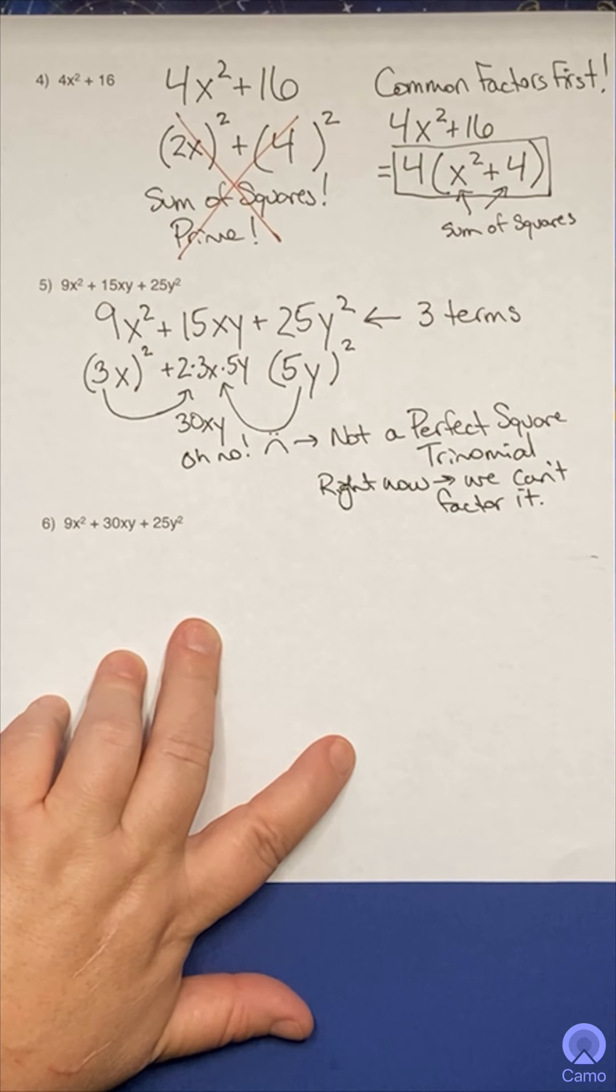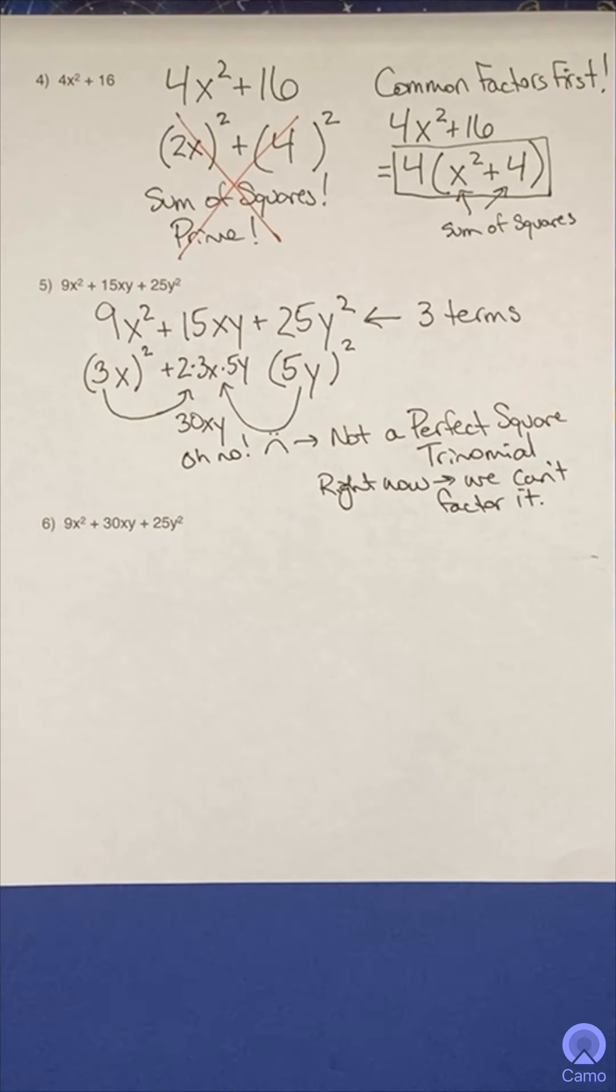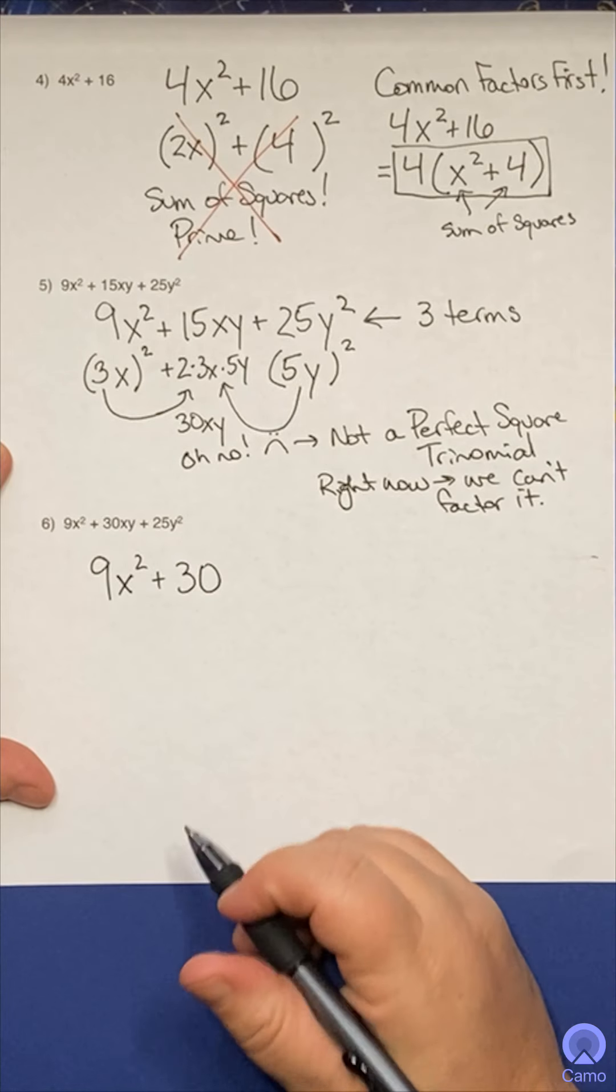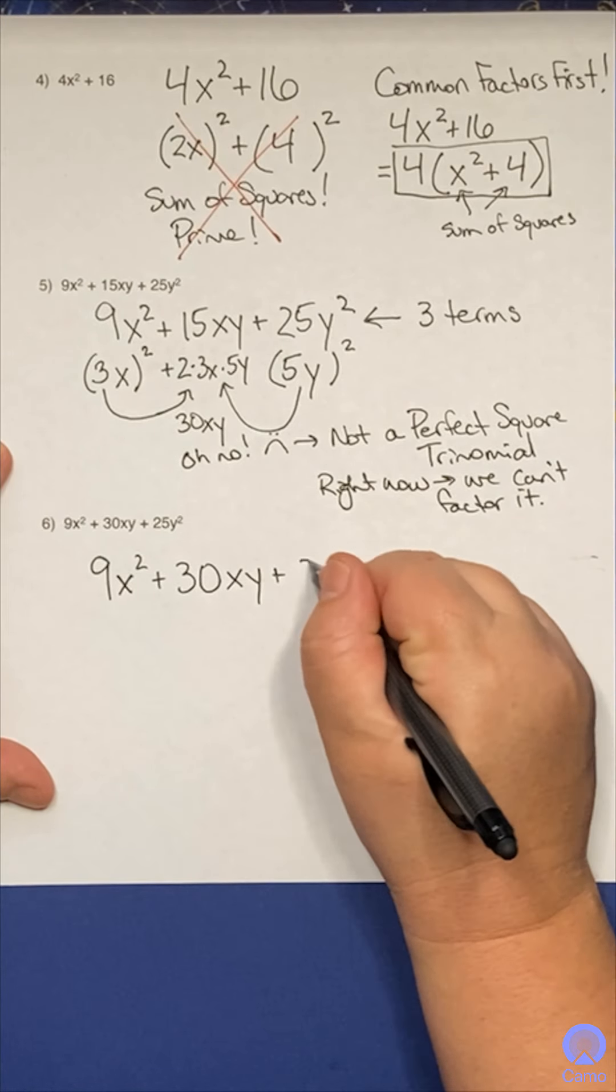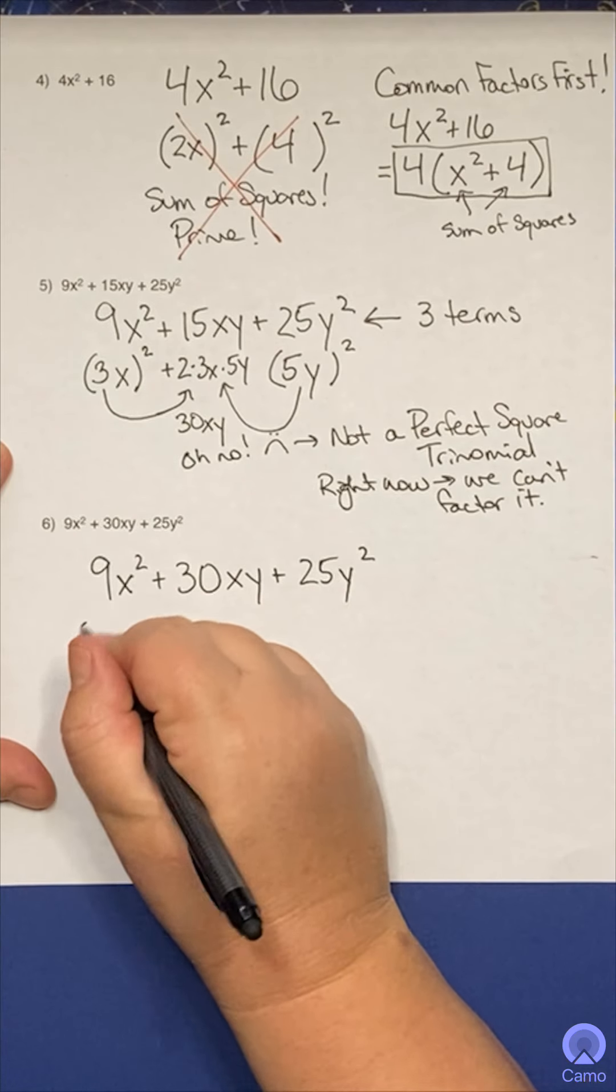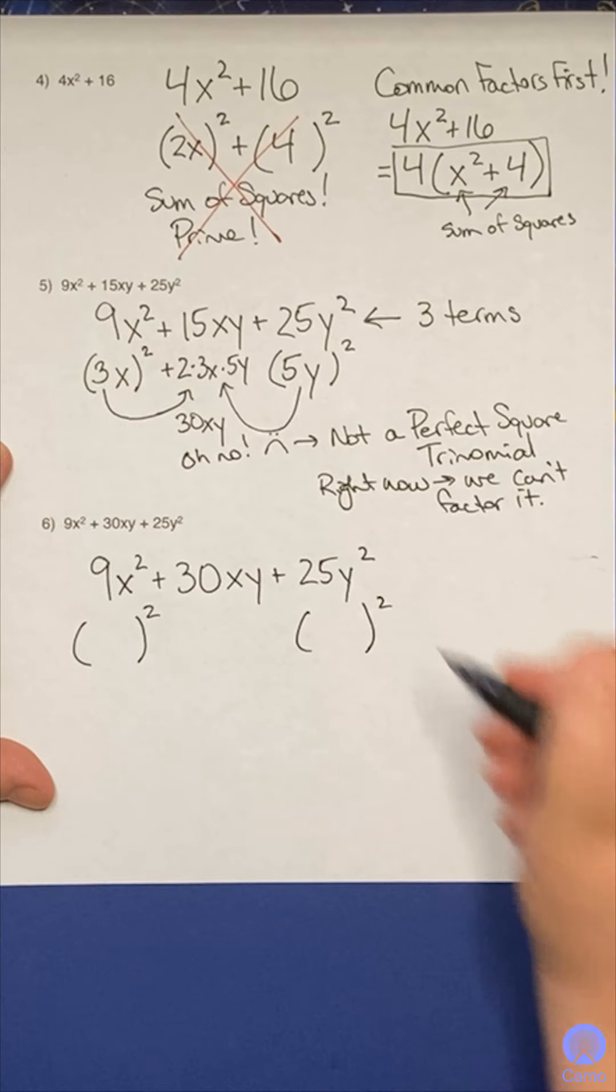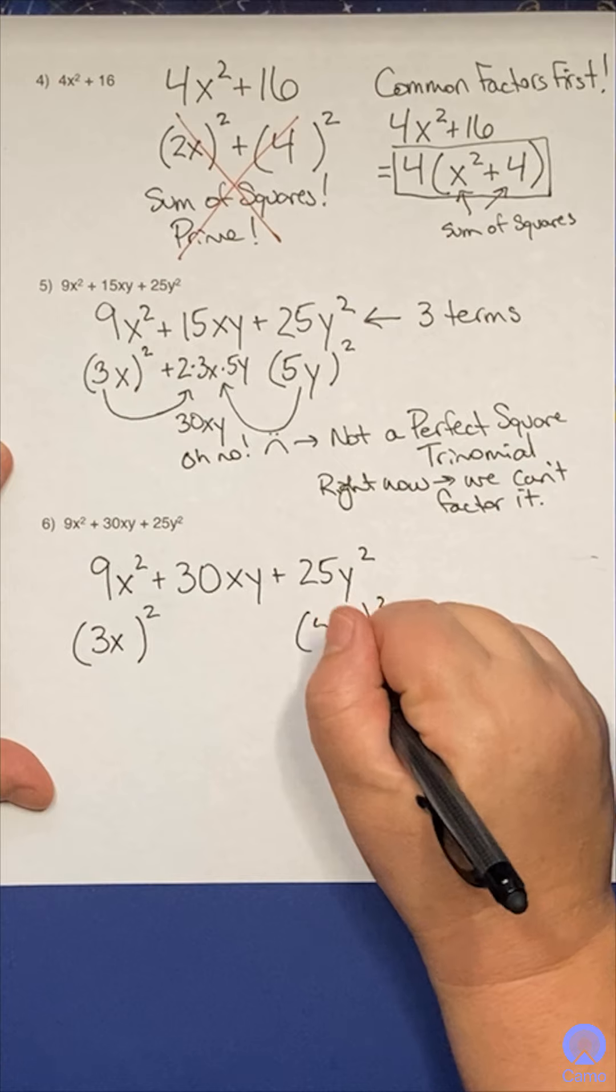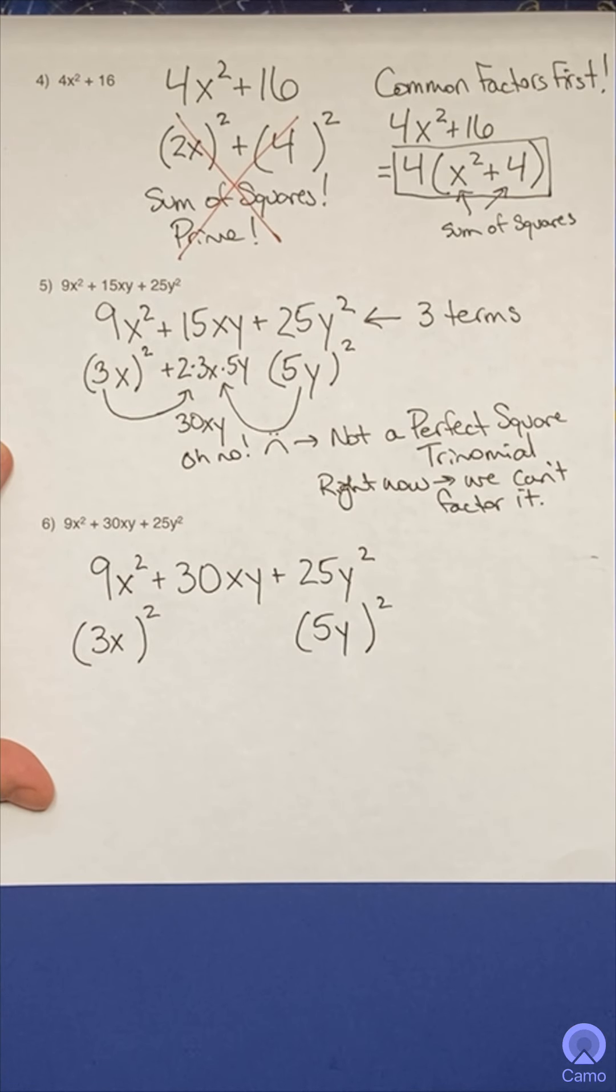Now, might there be other techniques? Absolutely. There are other techniques that we could try. But for right now, we're just going to say this doesn't fit the pattern. And if it doesn't fit the pattern, then we're just done with it. So let's look at number six. Oh my goodness. Look at this one. Very reminiscent. This one is 9x squared plus 30xy plus 25y squared. So let's try breaking it down. Can I come up with perfect squares at the beginning and the end? Yeah. 9x squared is 3x the quantity squared. 25y squared is 5y the quantity squared. Nice.